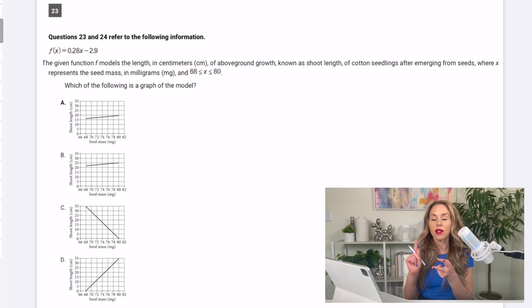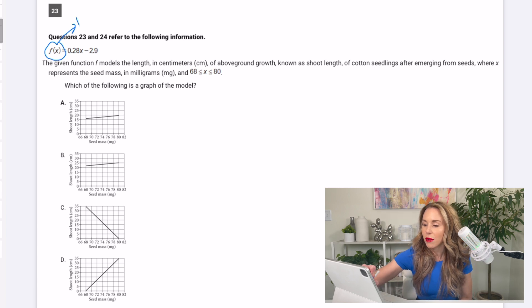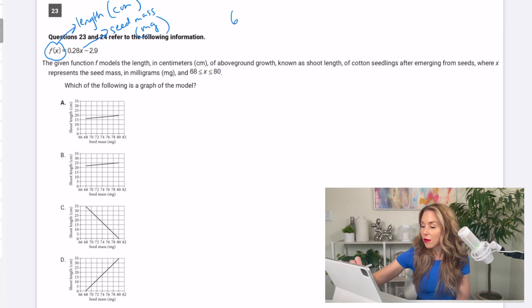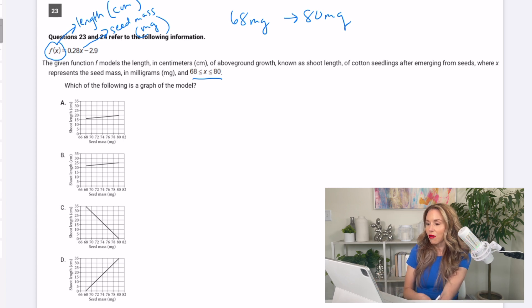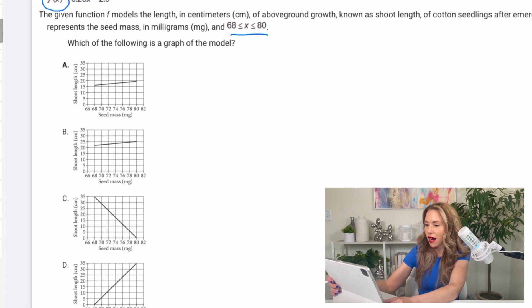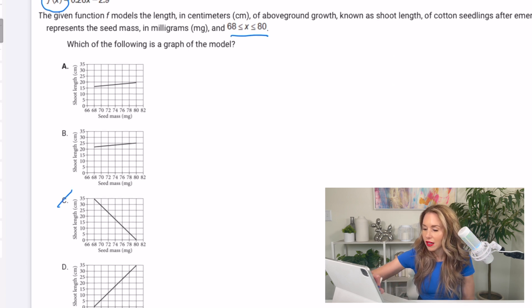So let's just get started. I'm going to look at this number 23. It says f of x equals 0.28x minus 2.9. Immediately, I'm already thinking linear function slope is 0.28, y-intercept is negative 2.9. So it says the function f models the length in centimeters. So I'm going to just label that f of x is the length in centimeters. And then x is the seed mass in milligrams. Now they're saying that the seed mass in milligrams is anywhere from 68 milligrams to 80 milligrams. So which of the following is a graph of the model?